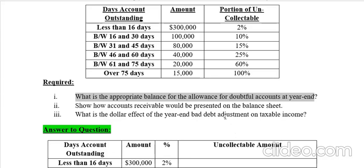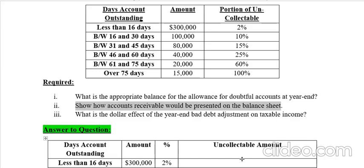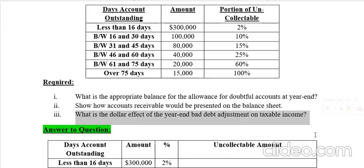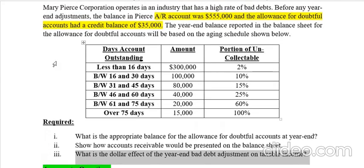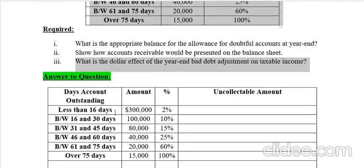The three questions are: first, what is the appropriate balance of the allowance for doubtful accounts — the total uncollectable amount; second, how will accounts receivable be presented in the balance sheet once the new allowance is calculated; and third, what will be the effect of this allowance for doubtful accounts adjustment on taxable income. I've copied the table and pasted it as part of the answer.